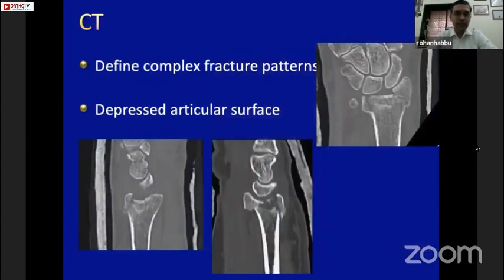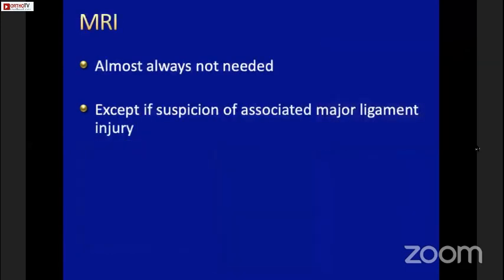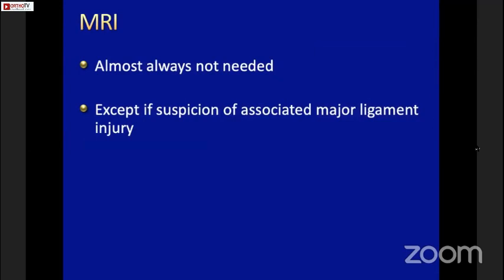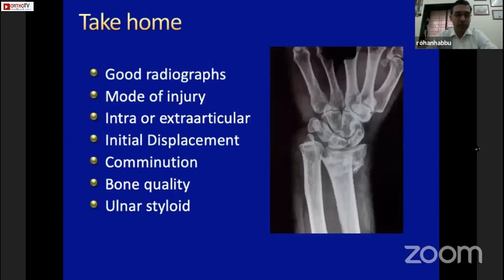In my practice, a CT scan is not a large part of managing distal radius injuries — I would say 90 out of 100 fractures we don't do a CT. A CT would be done if I'm suspecting a volar lip injury, a shear fracture, or a die-punch fracture that would not be seen on even the best X-ray. So in about 10% of wrist injuries I get a CT scan, which helps define complex fracture patterns and gives an idea of articular depression. An MRI is almost always not needed — I may have done just one MRI, primarily to rule out a major ligament injury when there was a very concerning carpal alignment.